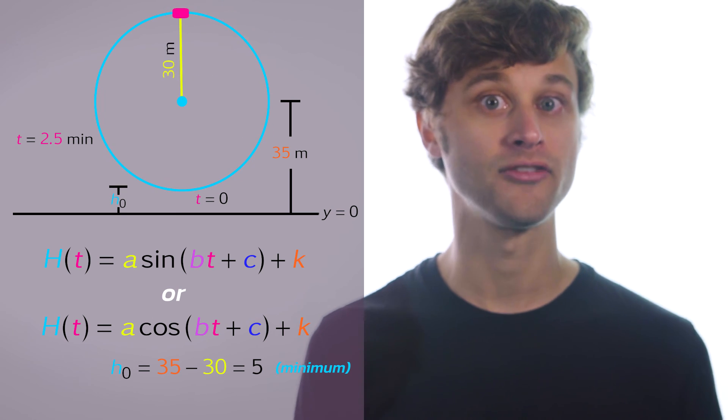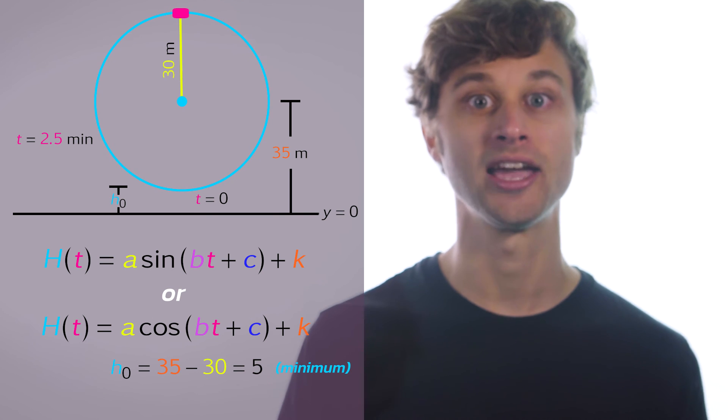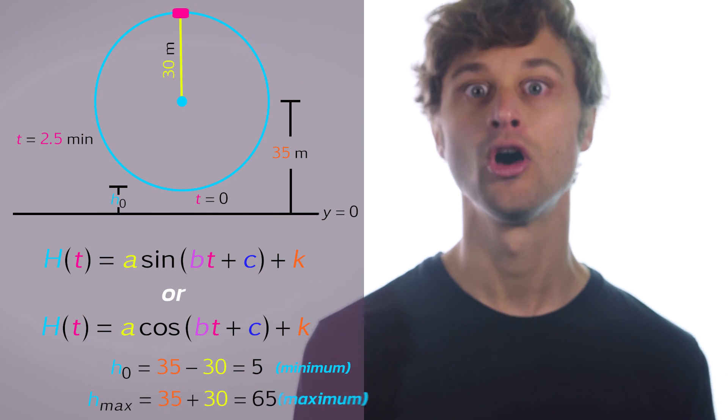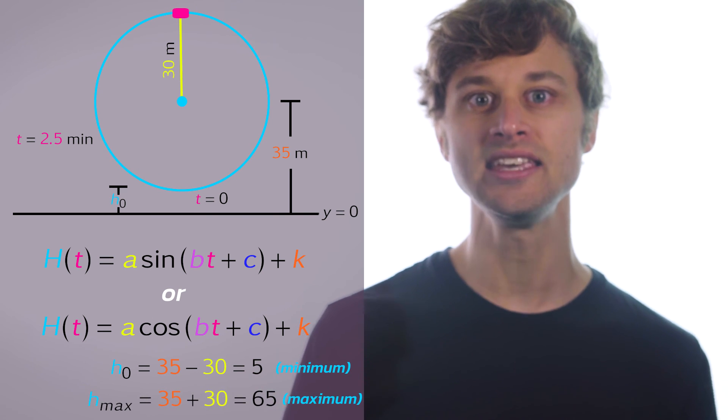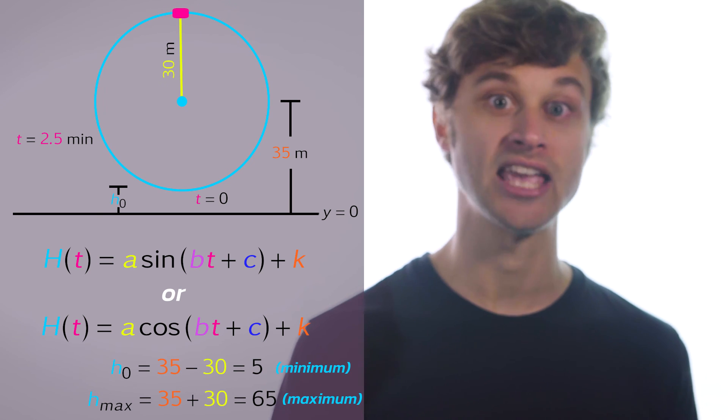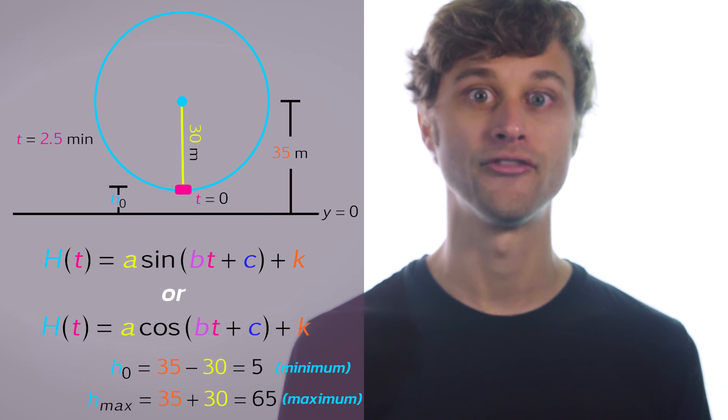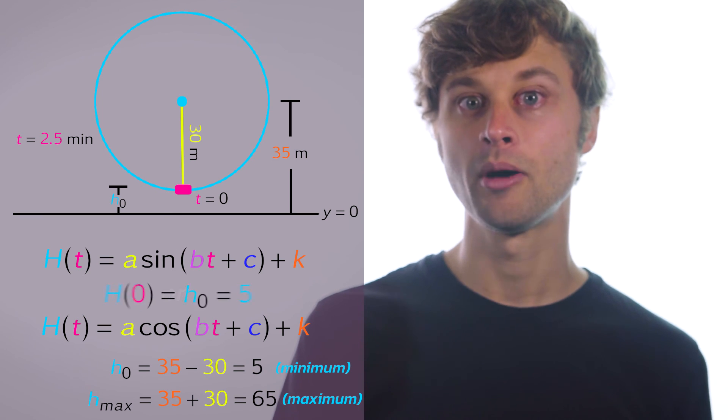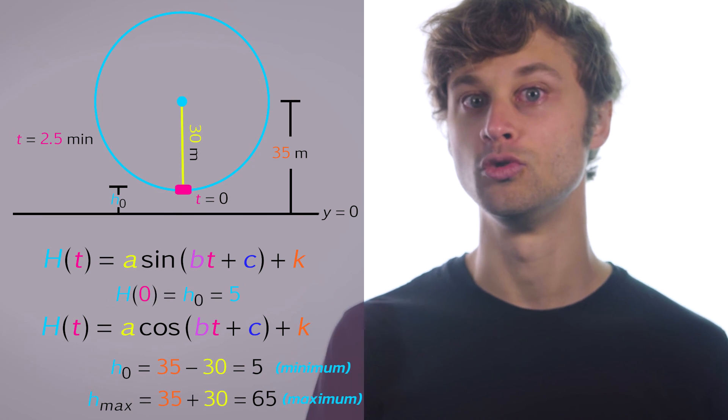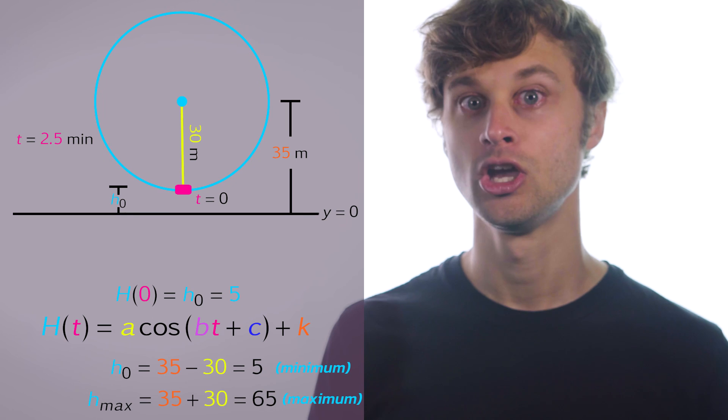So we have a minimum value of 5 when the passenger gets on the Ferris wheel. At the top of the Ferris wheel, we have a maximum height of just 30 plus 35, or 65. So we can see that our starting point is actually at a minimum here at the bottom of the Ferris wheel, so because we start at a minimum it's going to be useful to use cosine here.